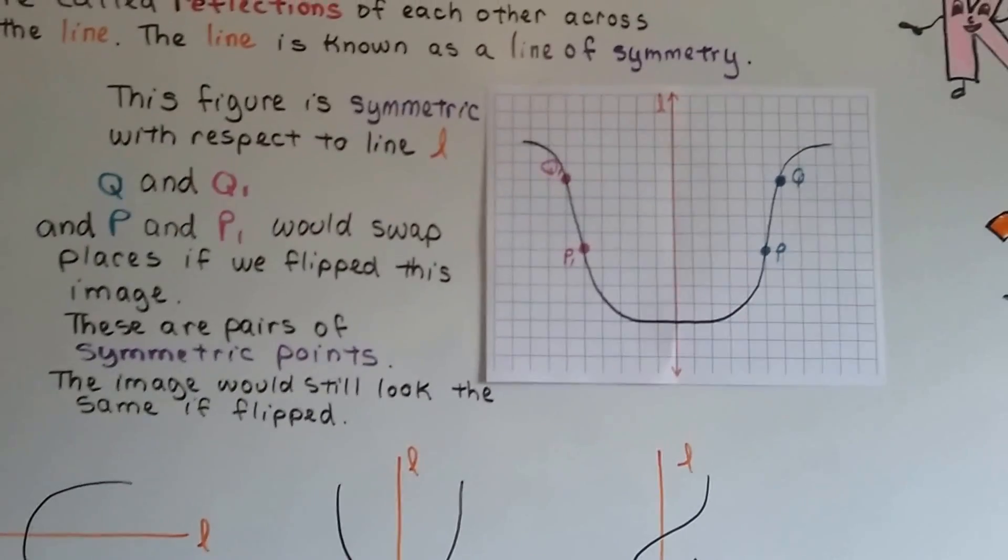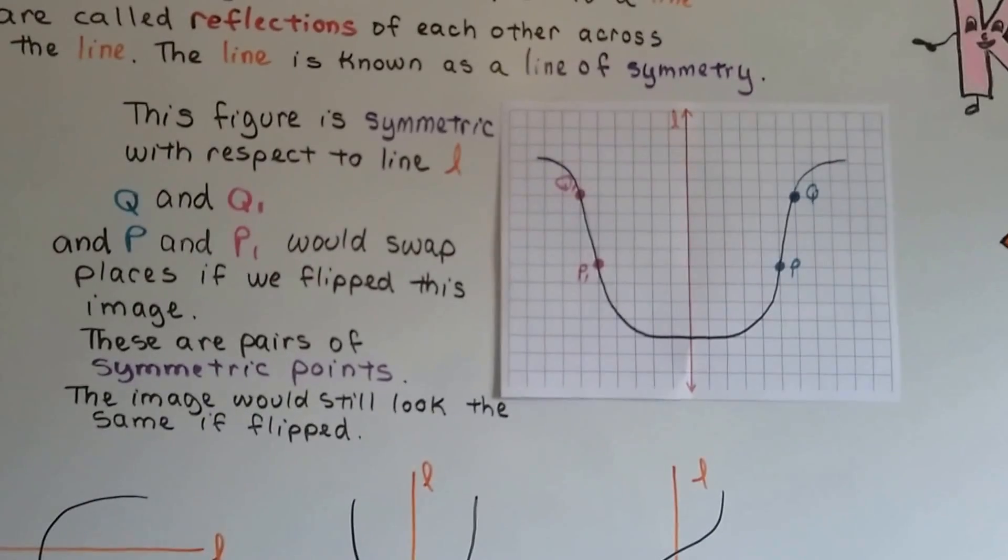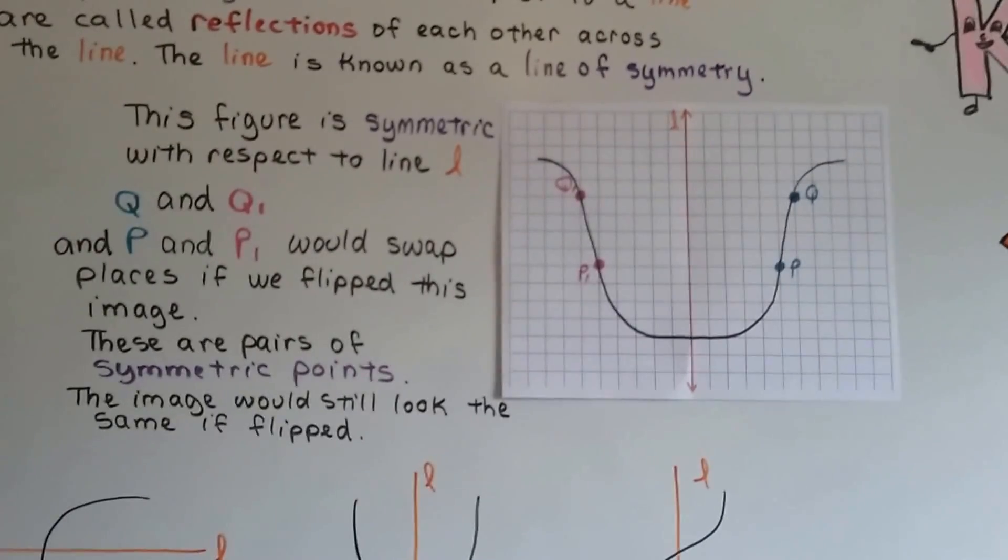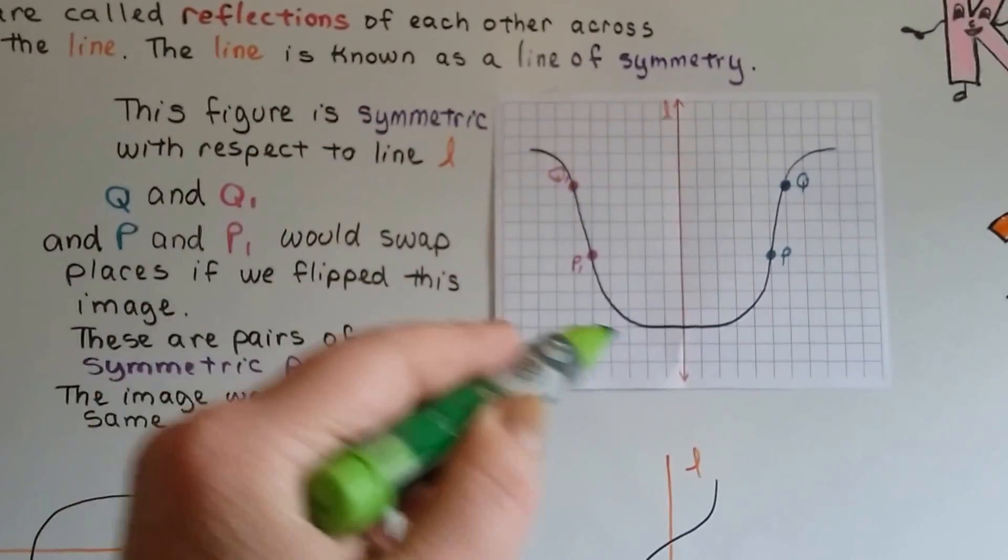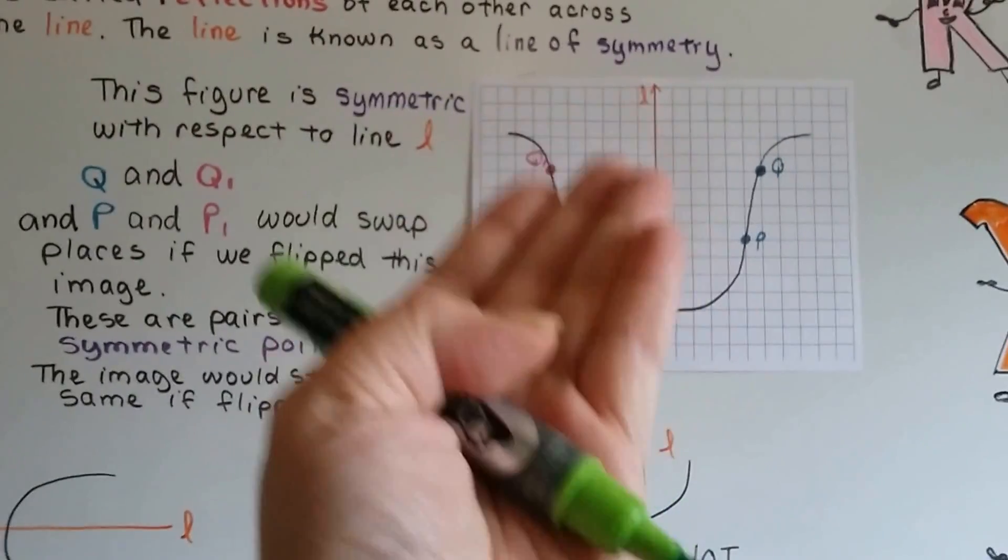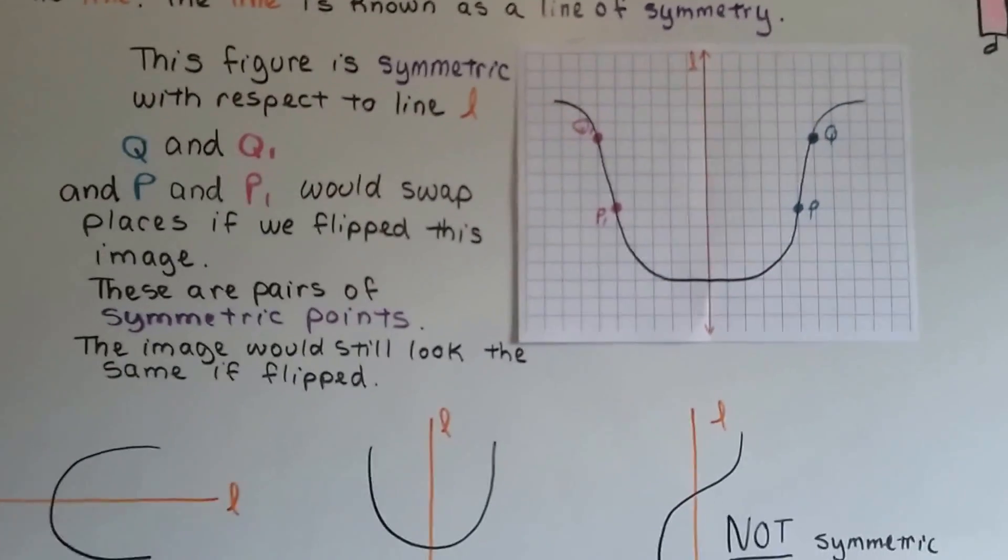These are pairs of symmetric points, and the image would still look the same if we flipped it over. If I drew so dark with my marker that it bled through to the other side, we could just flip this picture over and it'd still be identical, wouldn't it?